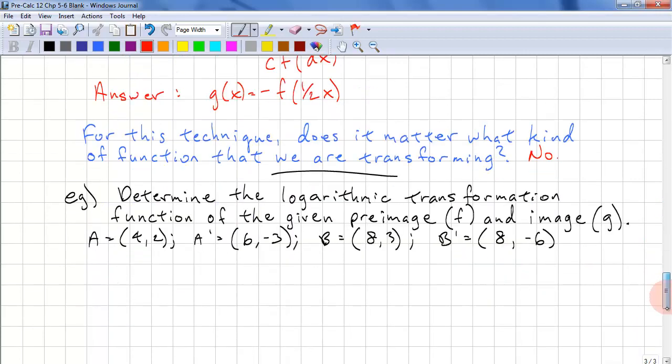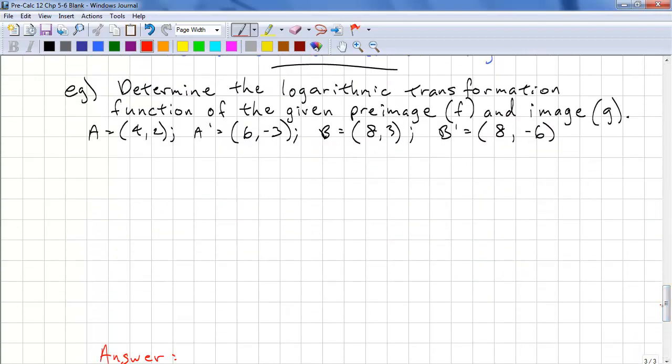One last example. Determine the logarithmic transformation of the function given the pre-image f and the image g. We are given two sets of points, a and a prime, b and b prime. The clue here is we have a system of linear equations. We're going to have to solve for all four coefficients, c, d, h, and k.